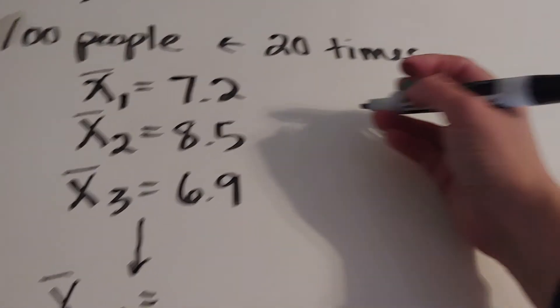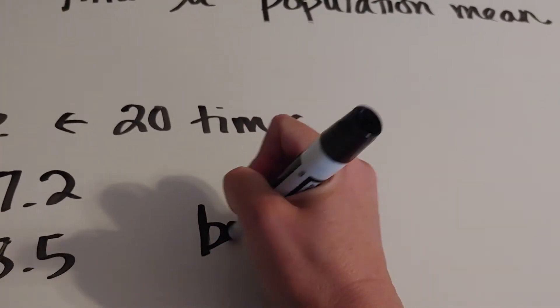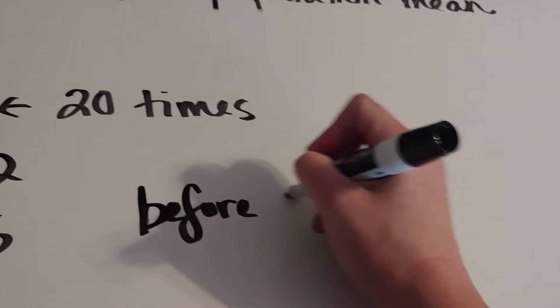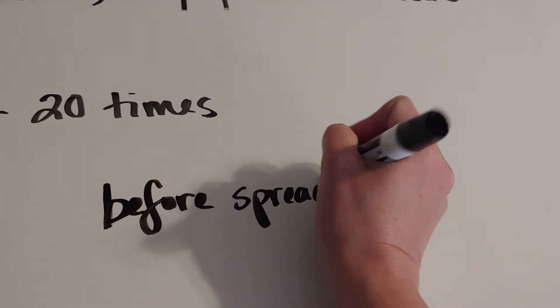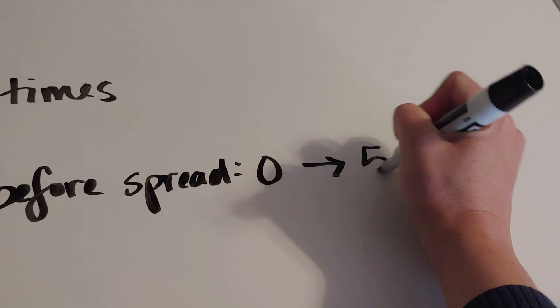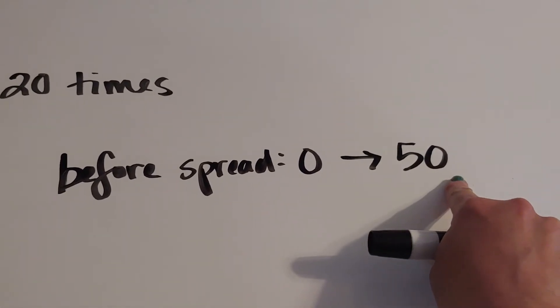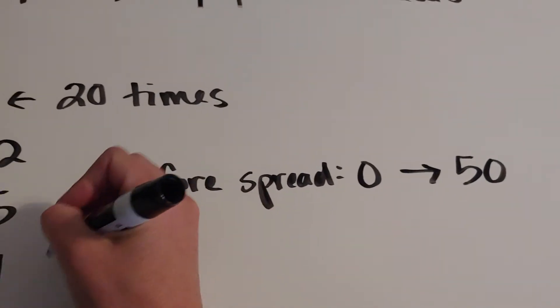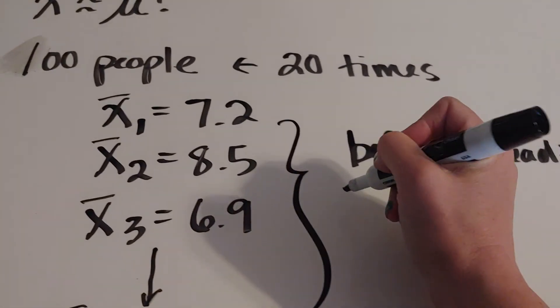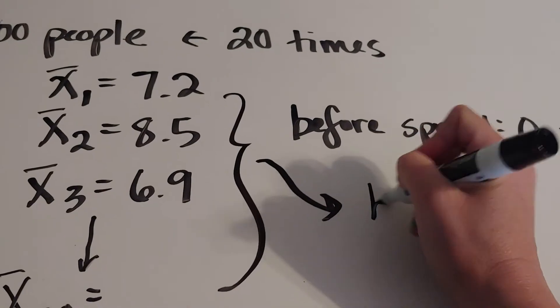So what will happen is that before, I may have had a spread of answers of zero to, let's just say, 50. So some people said they watch zero shows and some said they watch 50 shows. Now, based on my X̄s, we might see instead